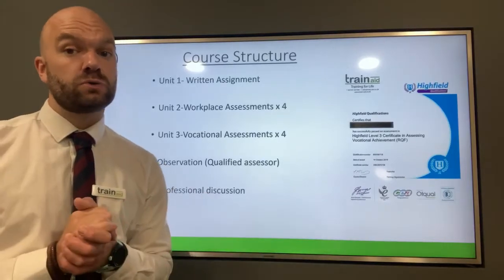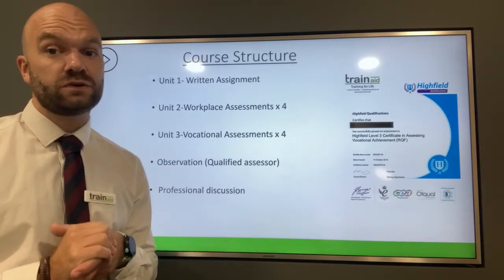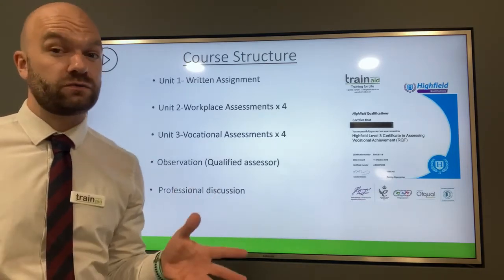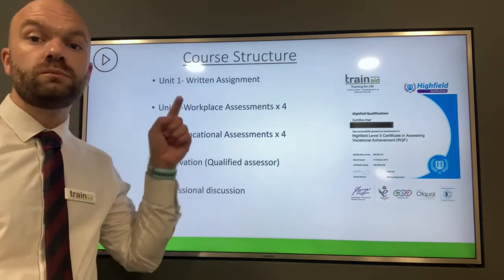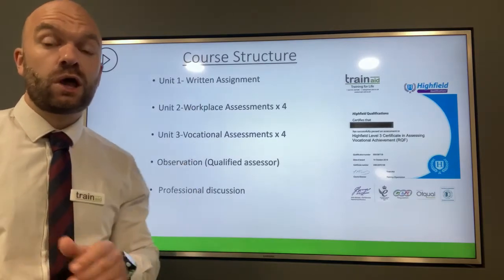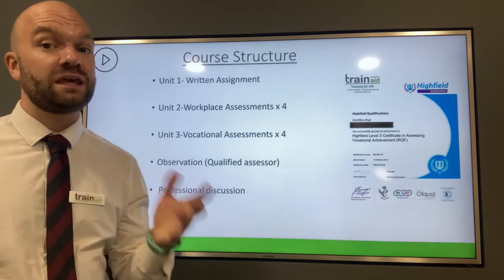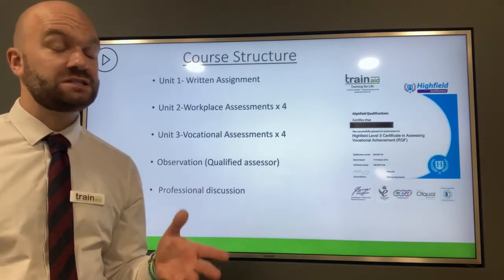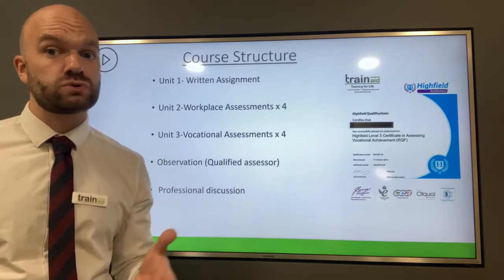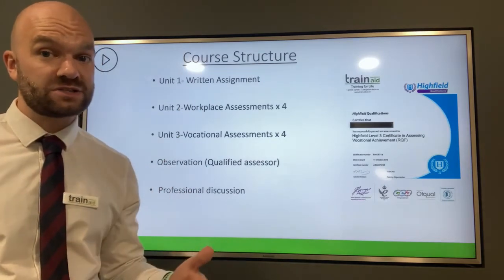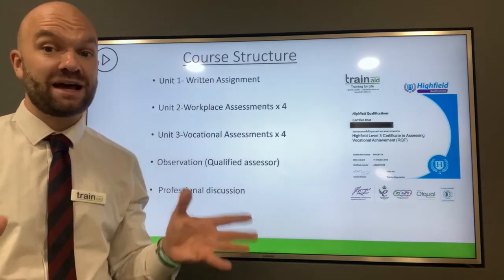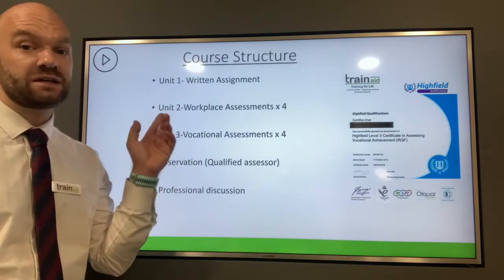In terms of course structure for the Level 3 Certificate in Assessing Vocational Achievement, otherwise known as the CAVA qualification, there are a number of steps to completing the course. First of all, we need to complete the theory element of the course. This is Unit 1, which is all about understanding the roles and responsibilities of an assessor. Once we've sent that in to the marking team and it's passed, you move on to the next section.